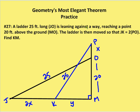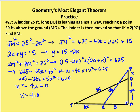Next problem: a 25-foot ladder JO is leaning against a wall, reaching a point 20 feet above the ground at MO. The ladder is then moved so that JK equals 2 times PO. I label PO as X and JK as 2X. First, JM squared plus 20 squared equals 25 squared, so JM squared equals 625 minus 400 equals 225, meaning JM equals 15. So 2X plus Y equals 15, giving Y equals 15 minus 2X.